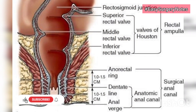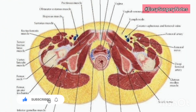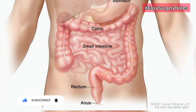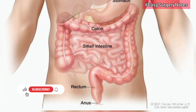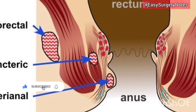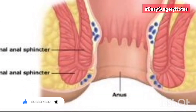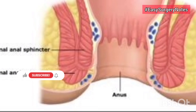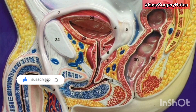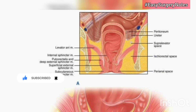External anal sphincter: surrounds the whole length of the anal canal and is voluntary. It is made up of striated muscles, subdivided into three parts — deep, superficial, and subcutaneous. The deep part is a thick annular band surrounding the upper part of the internal sphincter; its deep fibers fuse with the puborectalis muscle. It arises from the anococcygeal ligament and inserts into the perineal body. The superficial part is connected anteriorly to the perineal body and posteriorly to the anococcygeal ligament, surrounding the lower part of the internal sphincter.